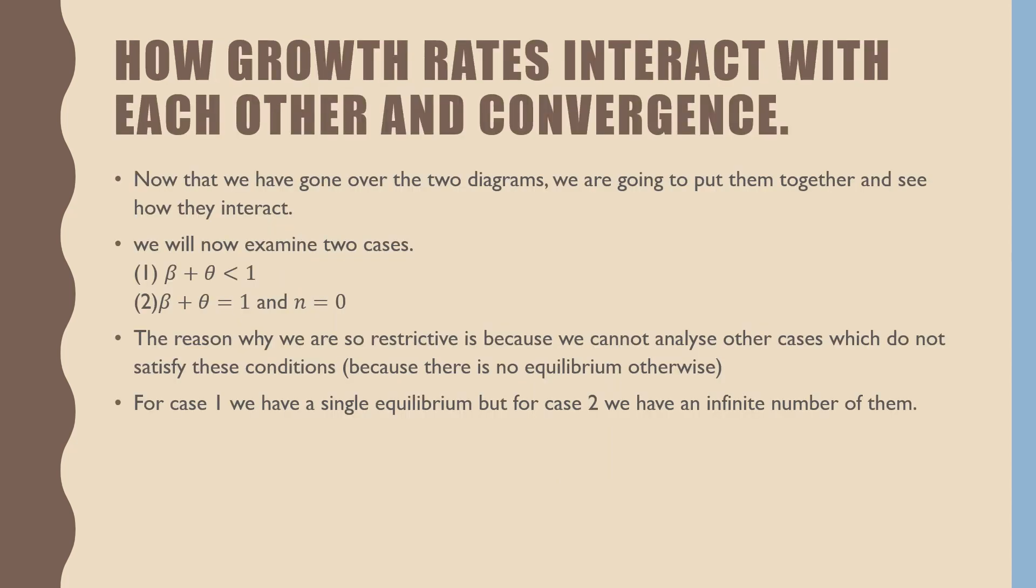Now that we've gone over two diagrams, we're going to put them together and see how they interact. We'll examine two cases. First case is beta plus theta is less than one. Second case is where beta plus theta is equal to one, but N equals zero. The reason why we are so restrictive is because we cannot analyze other cases which do not satisfy these conditions because there is no equilibrium otherwise, and our system is explosive. For case one, we have a single equilibrium, but for case two, we have an infinite number of them.